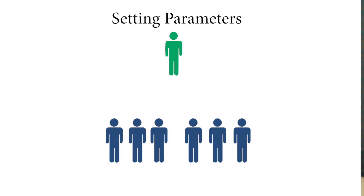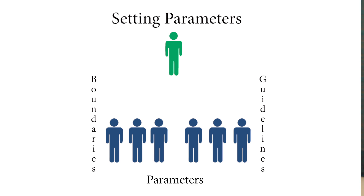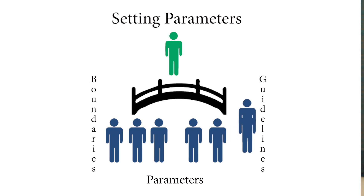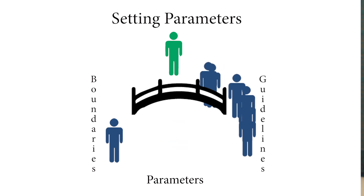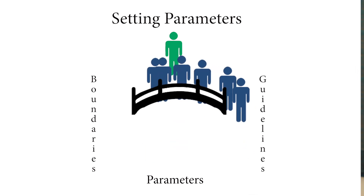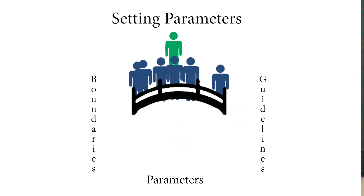We don't want that for our teams. By providing the boundaries and the guidelines — the leader saying here's what's in the conversation, here's what doesn't fit, here's the budget for this possible solution, whatever those boundaries are — then people can drive creatively across that bridge, or across the work that you've set for them. That's guideline number two.